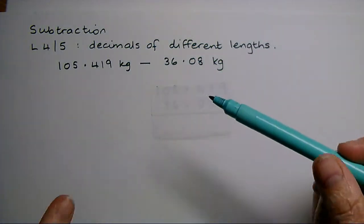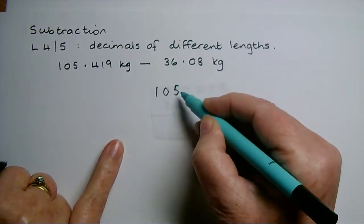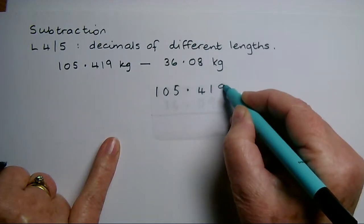Once you have got them in the same units, you write them underneath each other, making sure that you align all of the place values and the decimal points.